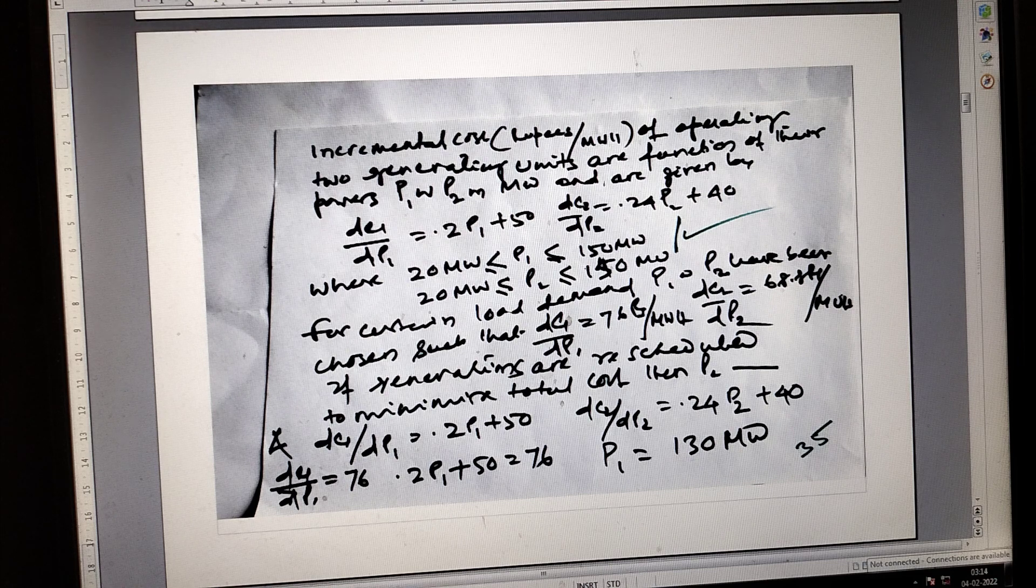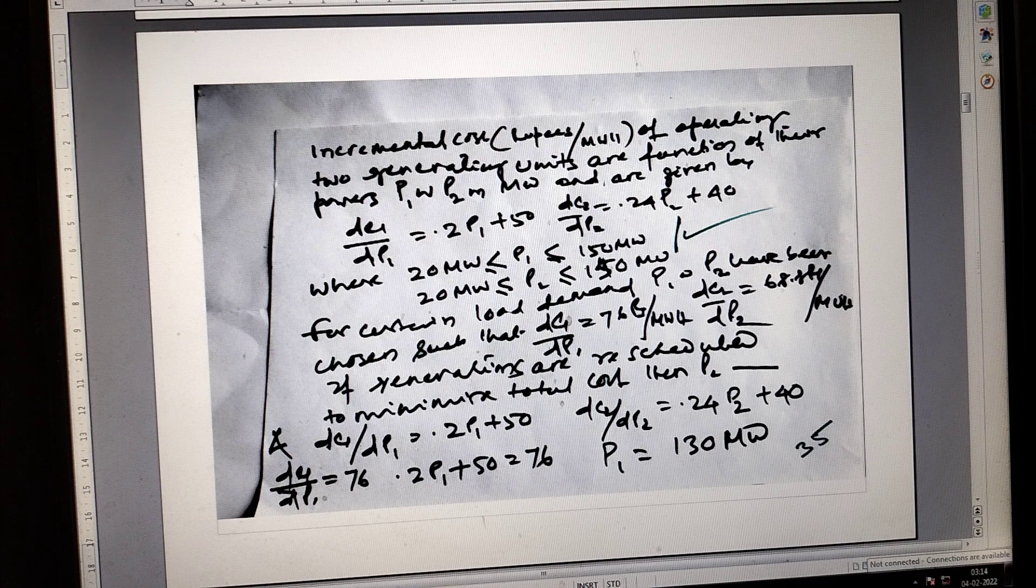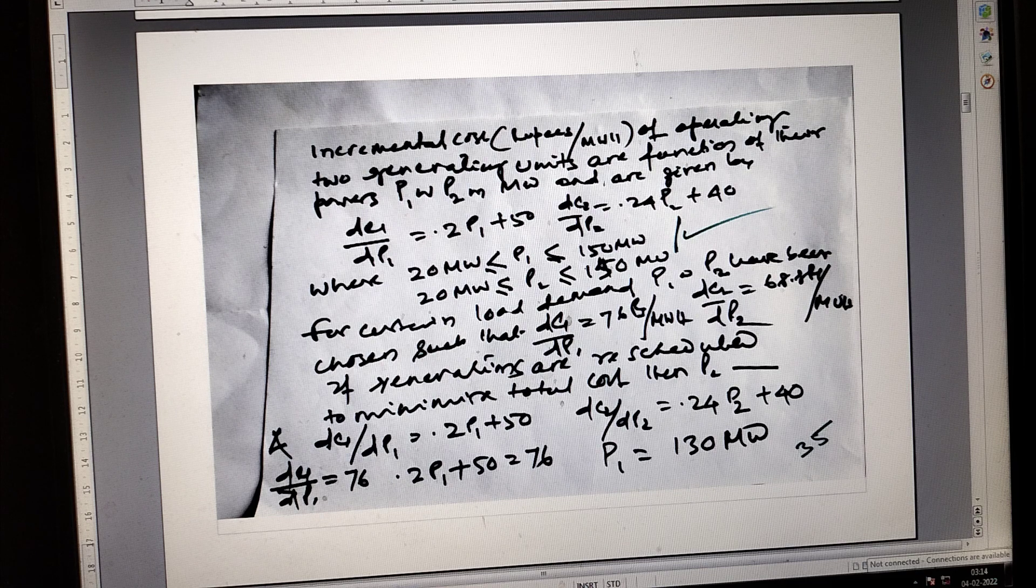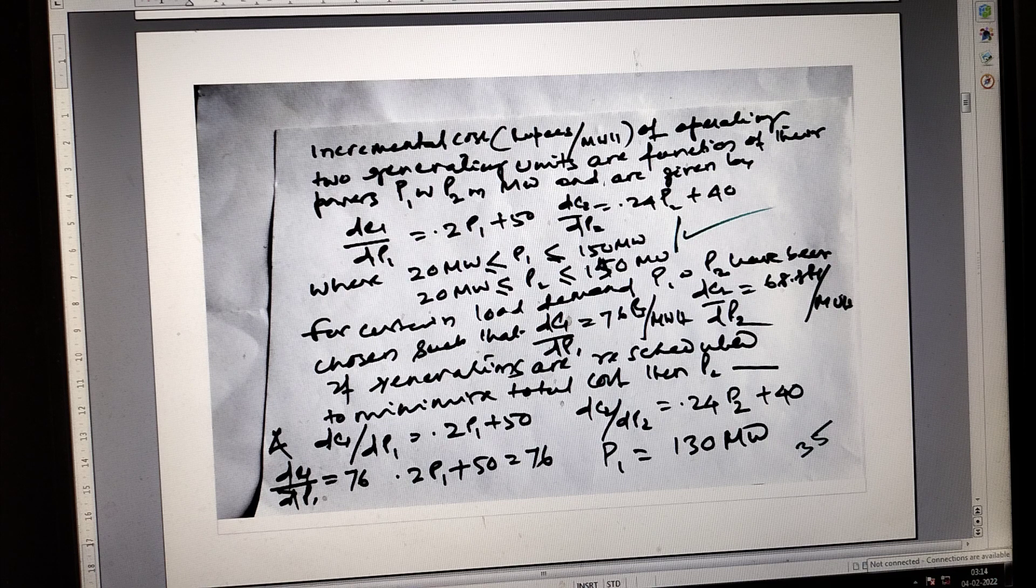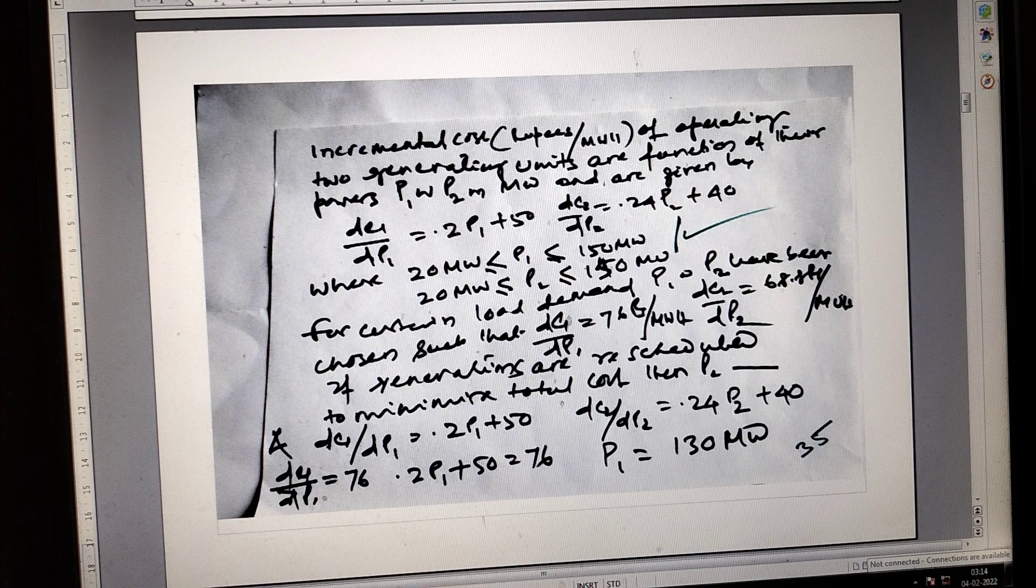DC1 by DP and DC2 by DP are given. You can easily calculate what is DC1 by DP or DC2. The current P is equal to 130 megawatts, P1 plus P2 equal to 250 to minimize the cost.